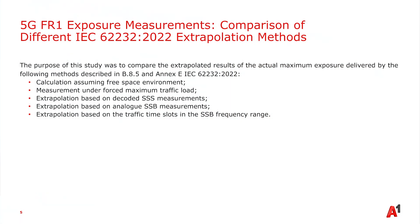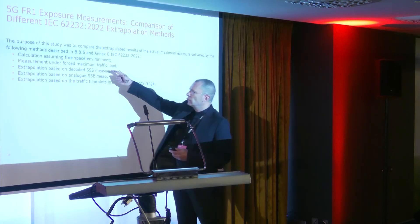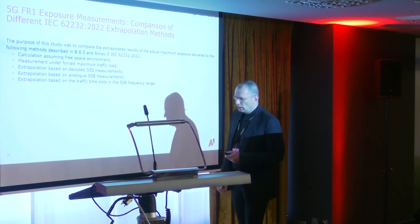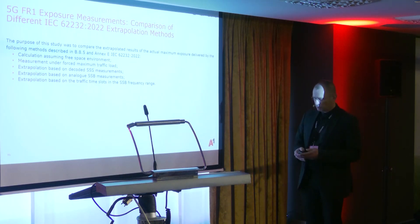The first method is calculation assuming a free space environment — calculating the exposure. The second is measurement under forced maximum traffic: we take user equipment behind the measurement antenna and force the beam to the measurement point with maximum traffic load, measuring frequency-selectively over the whole bandwidth and integrating over it. The third involves different extrapolation methods based on the signal that is always on, from which we can extrapolate.